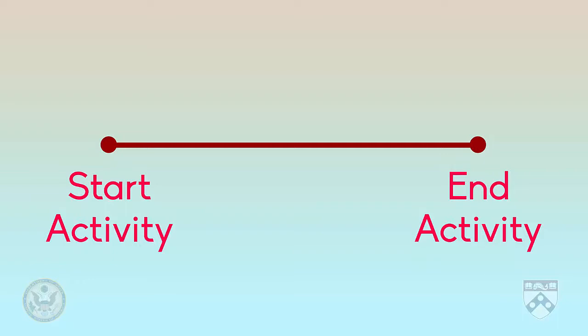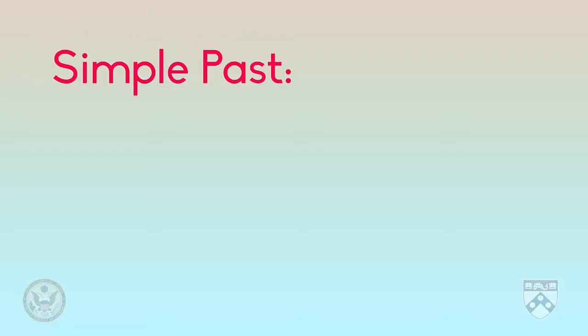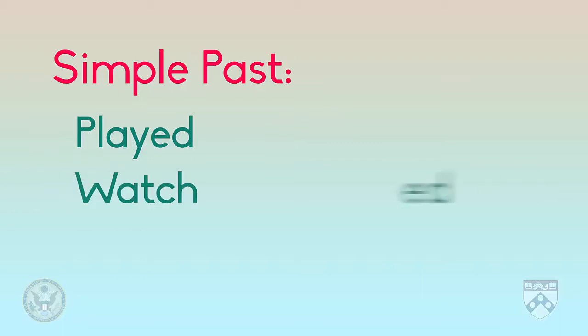Most verbs can be put in the past simply by adding -ed or just -d to the end of the verb. For example: played, watched, completed.